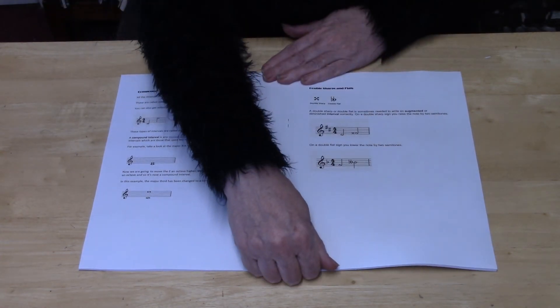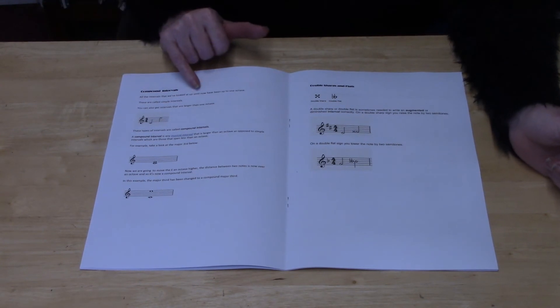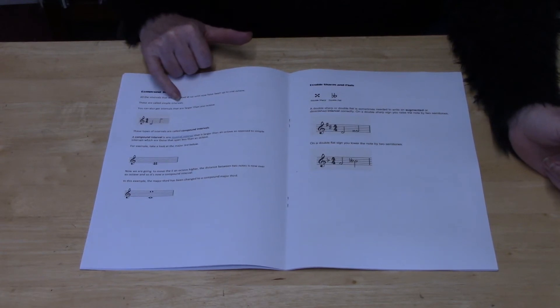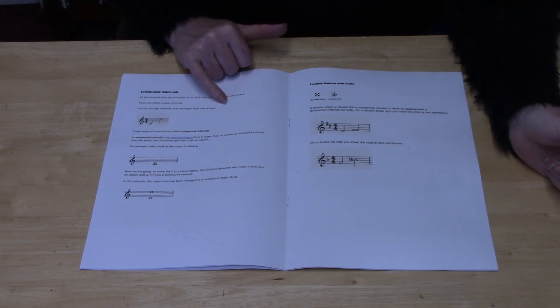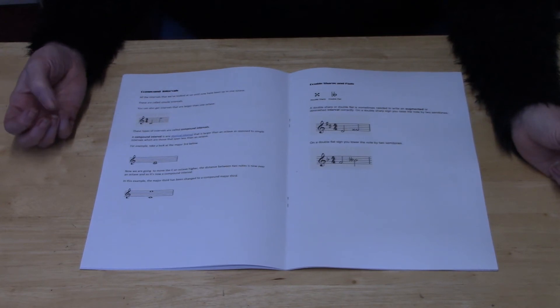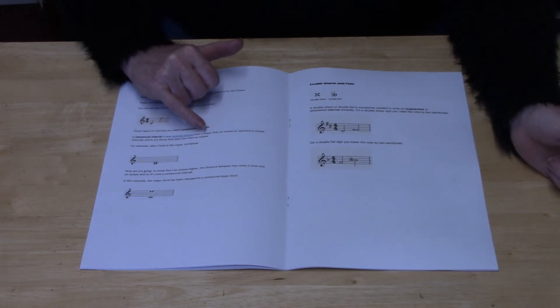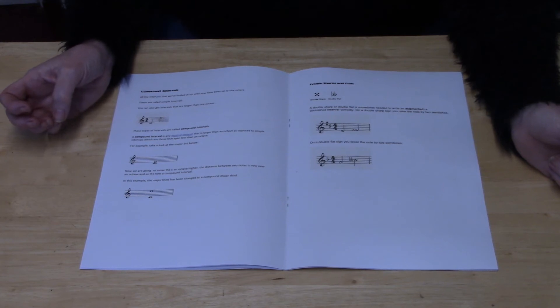Let's have a talk about compound intervals now. All the intervals we've looked at so far have just gone up to one octave. These are called simple intervals. But you can get intervals that are larger than one octave, and these intervals are called compound intervals. A compound interval is any musical interval that's larger than an octave, as opposed to a simple interval, which is smaller than an octave.